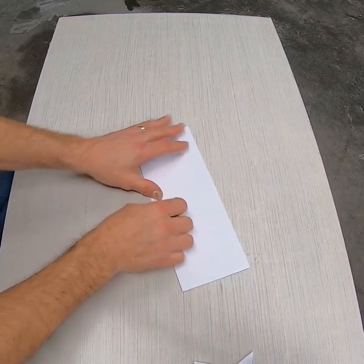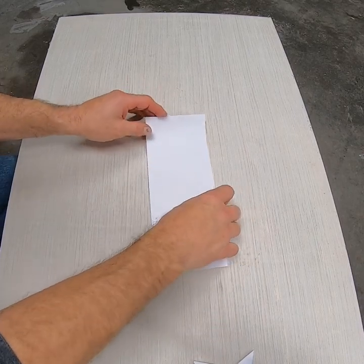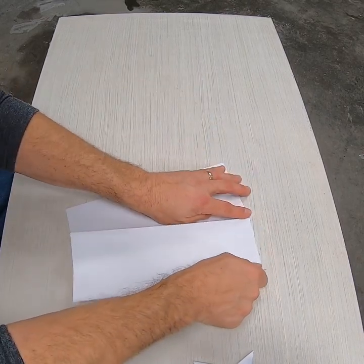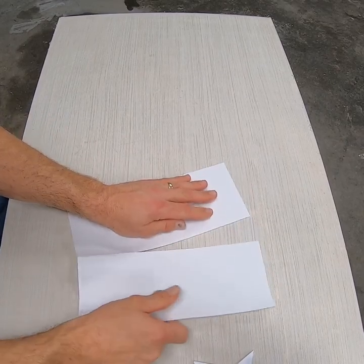If you want to do these precise, nice and neat, you can take a pair of scissors and cut them in half. I can just crease it really good with my fingernail, tear the paper in half.